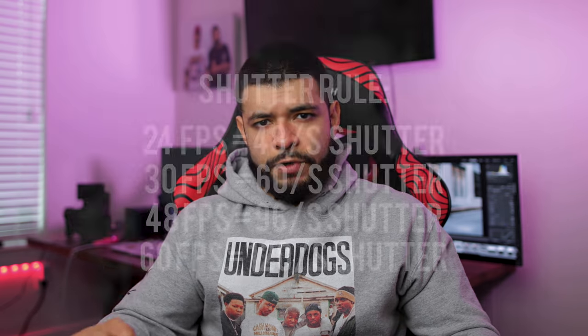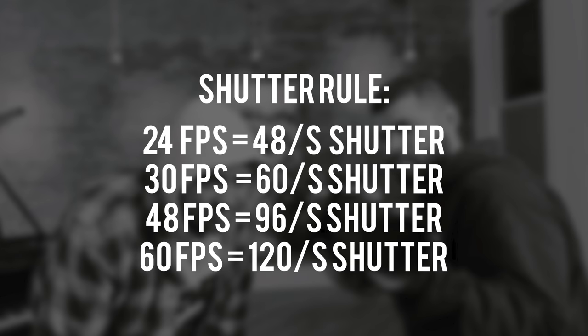When it comes to shutter speed in music videos, you'll usually want it to be double the amount of the frame rate you're shooting in. So if you're shooting in 24 frames per second, you'll usually want to shoot at 50 and above. If you're shooting in 60 frames per second for slow motion and B-roll, you'll want to shoot at 120 and above, and so on depending on your frame rate.